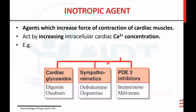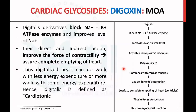First are inotropic agents — these agents increase the force of contraction of the cardiac muscle. All inotropic agents act by increasing intracellular calcium concentration. The first subclass is cardiac glycosides, specifically digoxin. The mechanism of action: digoxin inhibits the Na+/K+ ATPase enzyme, which increases sodium accumulation.